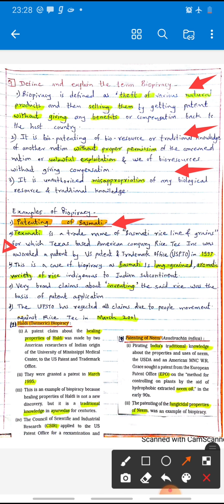The patent was granted by the USA Patent and Trademark Office in 1997. This is a case of biopiracy as basmati is a long grain aromatic variety of rice of India. Very broad claims about inventing the rice were the basis of the patent application. The UPSTO has rejected all claims due to people's movement against this patent. In March 2001, the second example of biopatent is haldi, which is also called turmeric biopiracy.